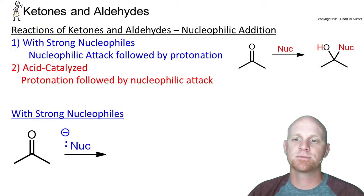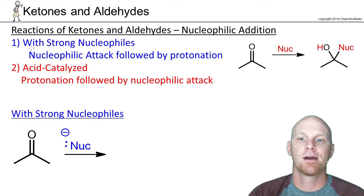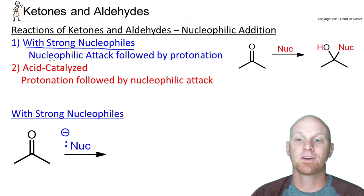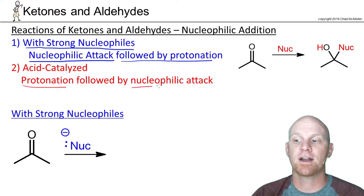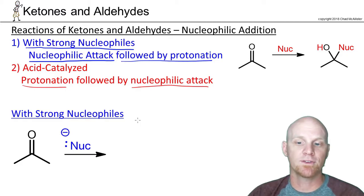So for these two mechanisms with nucleophilic addition, we're going to take a look at them both in detail, but they just pretty much go in reverse order as far as the mechanism. So with strong nucleophiles, your strong nucleophile attacks. That's the first thing that happens. And then we'll follow that up with protonation, where in the acid-catalyzed mechanism we'll protonate first and then follow that up with nucleophilic attack by the weak nucleophile.